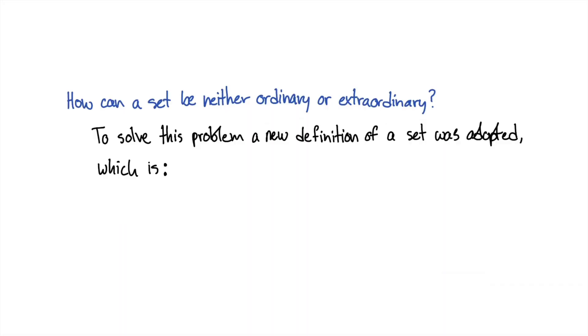But how can a set be neither ordinary or extraordinary? So to solve this problem, a new definition of a set was adopted, which is, a set is a collection of distinct objects, none of which is the set itself, which we saw at the start of the video.